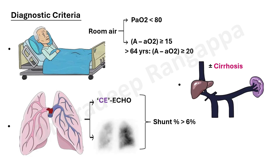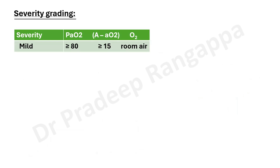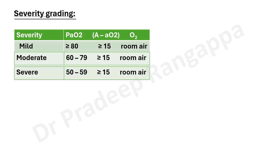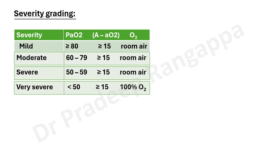Regarding severity grading — mild, moderate, severe, and very severe — the A-a gradient is more than 15 in all grades. In mild, there is no severe hypoxemia. In moderate, PaO2 is 60–79 with A-a gradient more than 15 on room air. In severe, PaO2 is 50–59 with A-a gradient more than 50 on room air. Very severe has PaO2 less than 50 with A-a gradient more than 50, possibly on non-rebreathing oxygen.